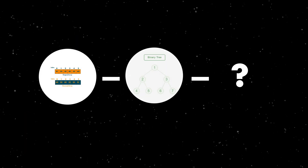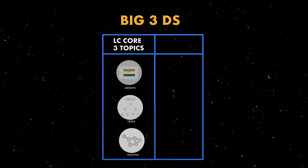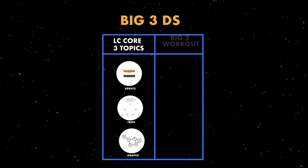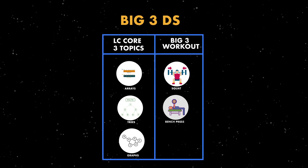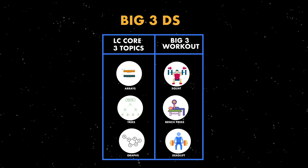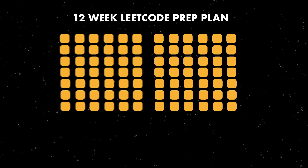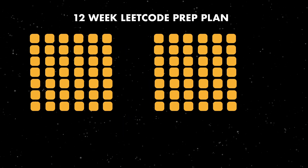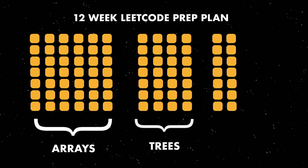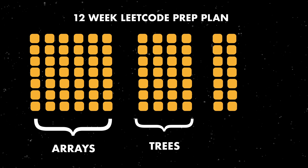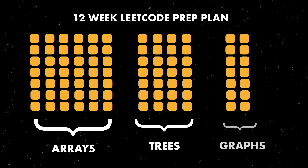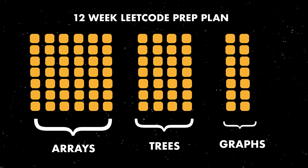The core data structures are arrays, trees, and graphs — these are what you really want to focus on. Arrays, trees, and graphs are like the squat, bench press, and deadlift of LeetCode. In the 12 weeks, we dedicate six weeks to patterns in arrays, four weeks to patterns in trees, and two weeks to patterns in graphs.